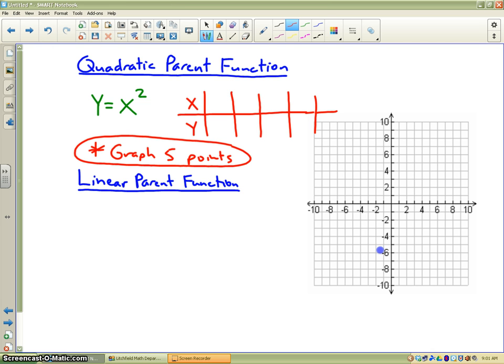The most important point is going to be called the vertex. For the parent function, the vertex lies at 0, 0. If I plug 0 in for x, you get 0 out for y. It is important when you graph quadratic functions to choose some values for x on each side of the vertex. That is why I am going to pick negative 2, negative 1, 1, and 2 to get a couple of points on each side.